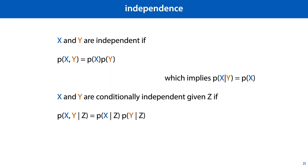If two variables x and y are independent, then knowing y will not change what we know about x. One way to define this is by saying that we can compute the joint distribution by multiplying the two marginal distributions. And with a little rewriting, we can see that this implies that the probability of x given y is equal to the probability of x.